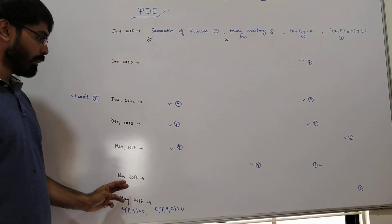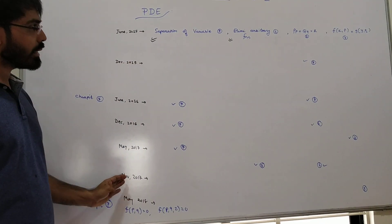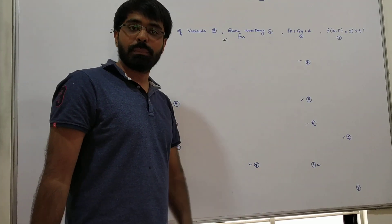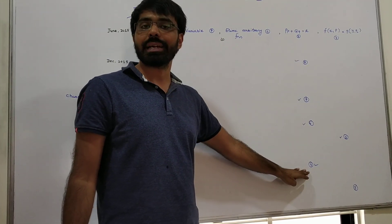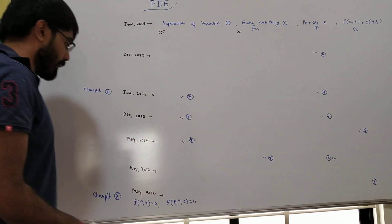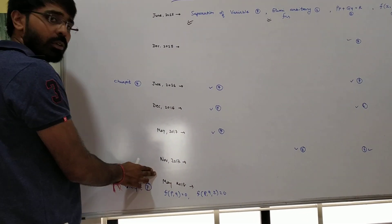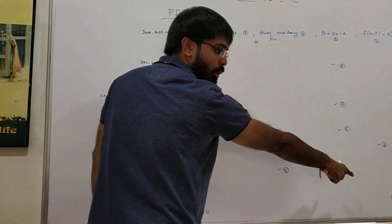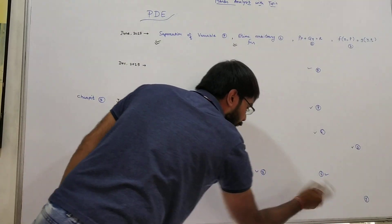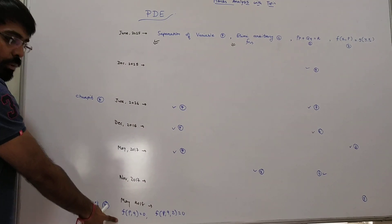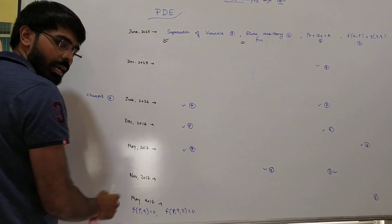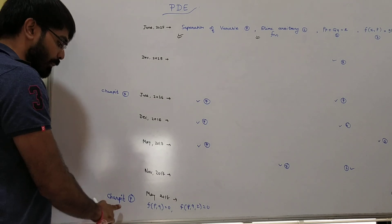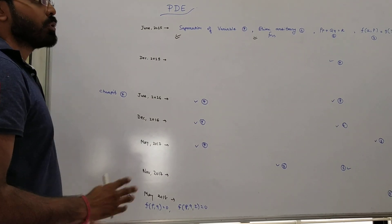F(x,p) = G(y) — 3 marks. Eliminating arbitrary functions — 3 marks. P(p) + P(p) = R by method — 4 marks. F(x,p) = G(y) method — 3 marks. F(pq) = 0 — this step is also covered, and Charpit's method — 7 marks.